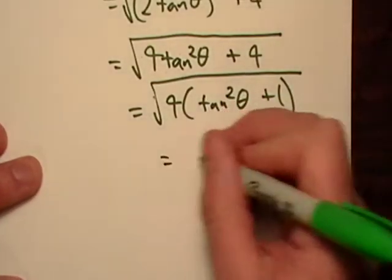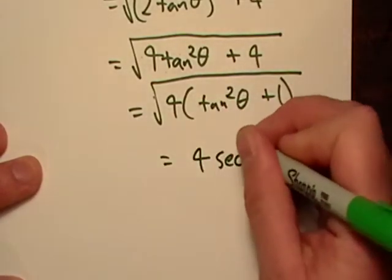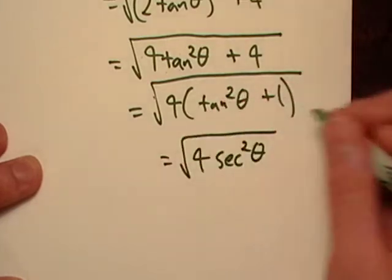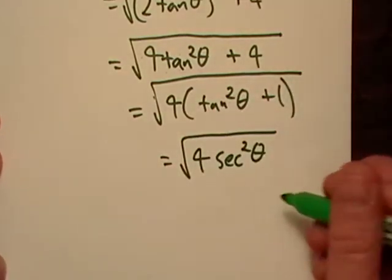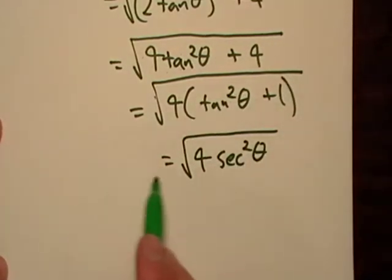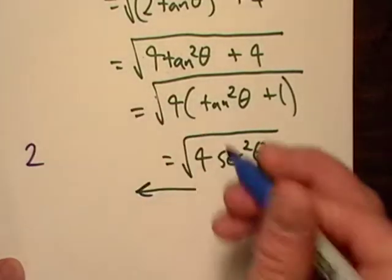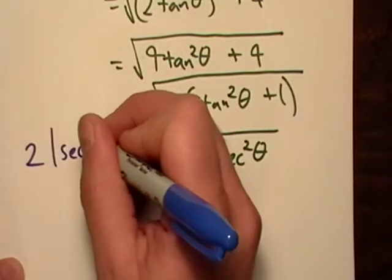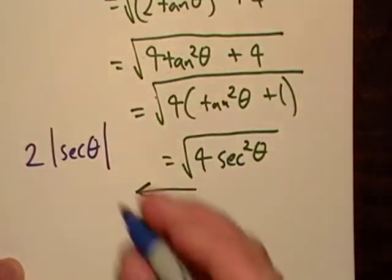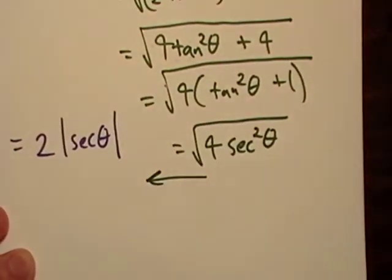So this is equal to, and it looks like the square root will cancel out, so I'm going to go this way now so I don't run out of paper. We're going to get 2 equals absolute value of secant theta.